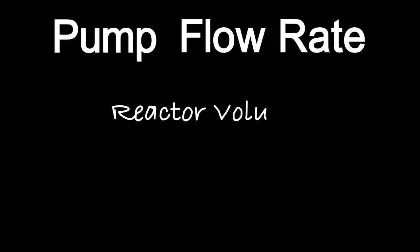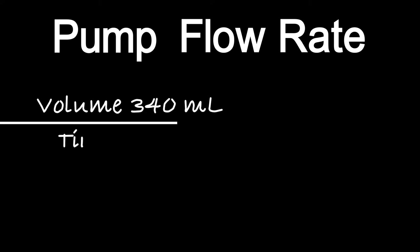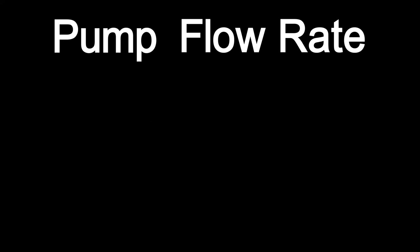The pump flow rate is determined by dividing the reactor volume by a residence time of 30 minutes. For example, a reactor with a volume of 340 milliliters will need a flow rate of 11.3 milliliters per minute. Follow the pump manufacturer's instructions to set the flow rate. Use the same size and type of tubing that will be used in the experiment. Confirm the flow rate with a timer and adjust accordingly so that it is within plus or minus 0.2 milliliters per minute.